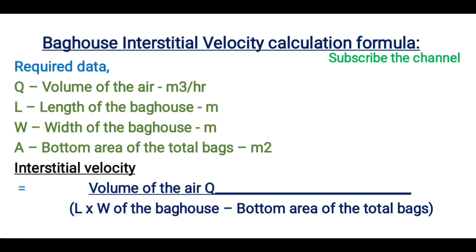How to calculate the interstitial velocity for the bag house. Required data: Q — volume of the air in cubic meters per hour; L — length of the bag house in meters; W — width of the bag house in meters; A — bottom area of the total bags in square meters. Interstitial velocity equals the volume of the air divided by the length and width of the bag house minus the bottom area of the total bags.